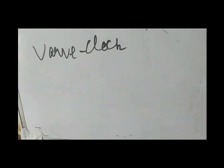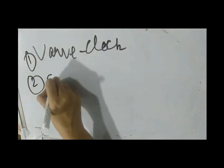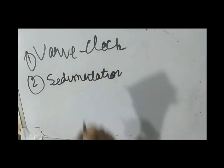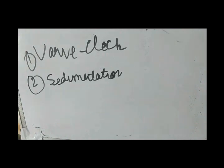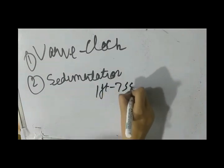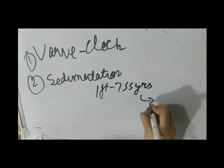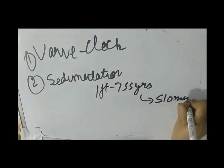Second, you have the sedimentation clock. In this, the average rate of deposit of sediments is calculated and then you calculate the thickness of the sediments to know the age. It is accepted that on average, you have 1 foot of deposit in 755 years, so the age of the earth comes to around 510 million years.